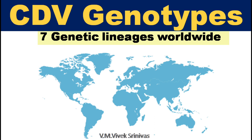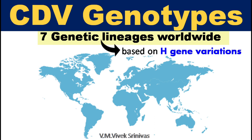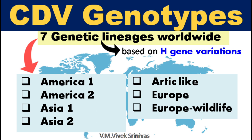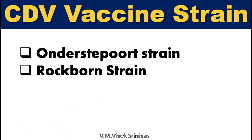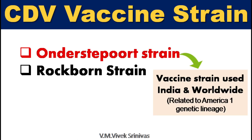Genotypes: There are seven canine distemper virus genetic lineages at various geographic locations worldwide, based on variations in the H gene — America 1, America 2, Asia 1, Asia 2, Arctic-like, Europe, and Europe wildlife lineage. This is previous documentation. At present, there are 17 CDV genetic lineages worldwide. The canine distemper vaccine strains are the Onderstepoort strain and the Rockborn strain. The Onderstepoort strain is used in CDV vaccines in India and worldwide and is related to the America 1 genetic lineage. Currently, the Rockborn strain is not in use.